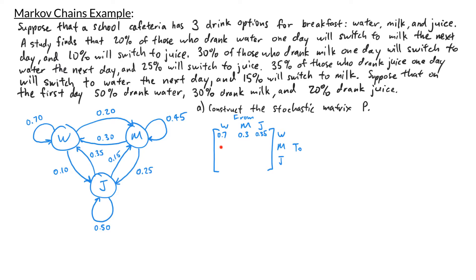In the middle left entry, going from water to milk, the arrow is labeled 20%, so I write 0.2. In the middle entry, from milk to milk, the arrow going from milk back to itself is labeled 0.45. In the middle right entry, going from juice to milk, that's labeled 0.15. The bottom left entry is from water to juice, labeled 0.1. The bottom middle is from milk to juice, labeled 0.25. And from juice to juice, that's labeled 0.5.